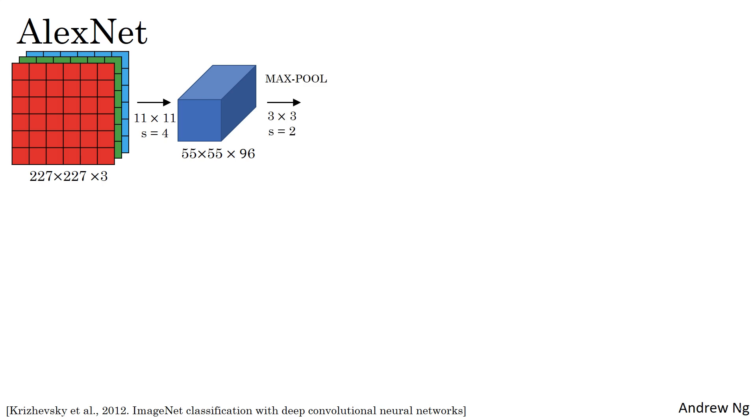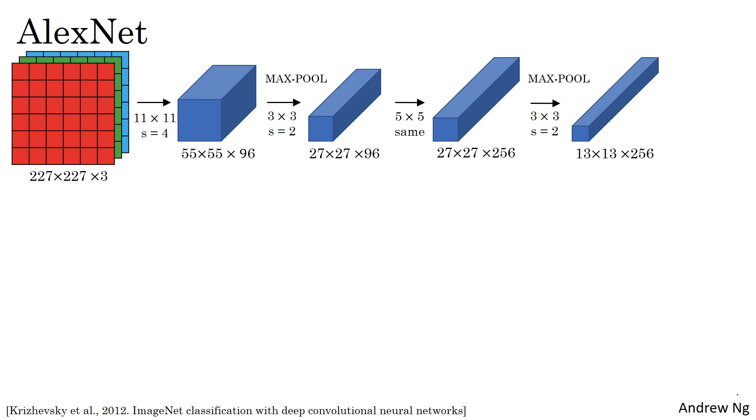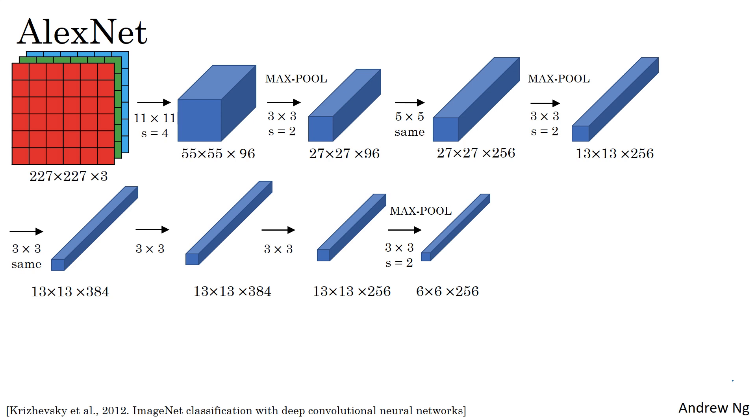Then it applies max pooling with a 3 by 3 filter and a stride of 2. This reduces the volume to 27 by 27 by 96. Then it performs a 5 by 5 same convolution with padding. So you end up with 27 by 27 by 276. Max pooling again reduces the height and width to 13. Then another same convolution, same padding, 13 by 13 by 384 filters. Then 3 by 3 same convolution again, then 3 by 3 same convolution gives you that. The max pool brings it down to 6 by 6 by 256.